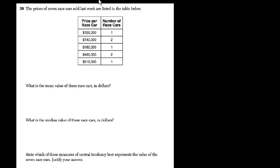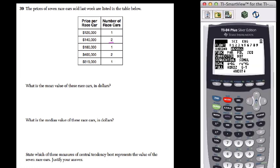The only thing tricky about this is that there's a frequency associated with each number. You wouldn't just deal with $126,000 once and then $140,000 also once, because $140,000 is actually listed twice. So in this case, I'm going to use the graphing calculator.